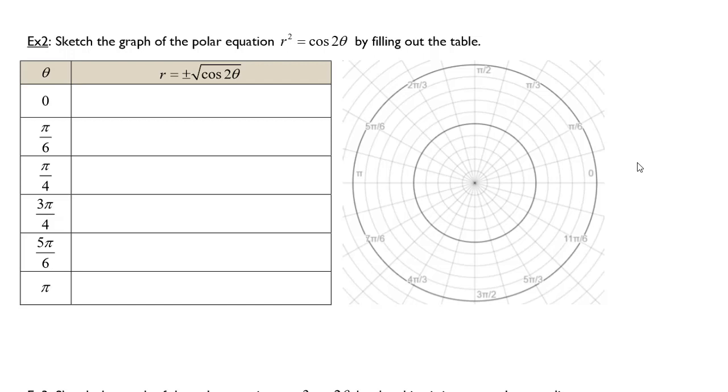Welcome to video 2 on graphing polar equations. We're going to look at the next example where we're asked to sketch the graph of the polar equation r squared equals cosine 2 theta by filling out the table.